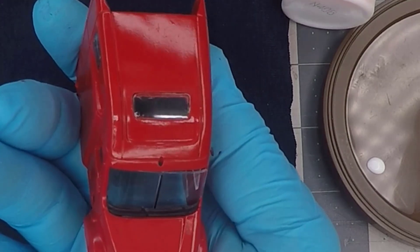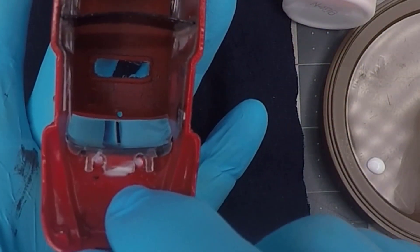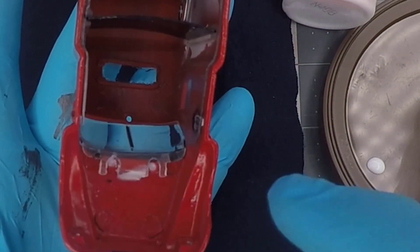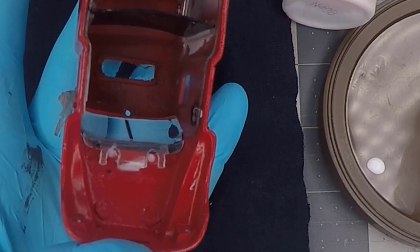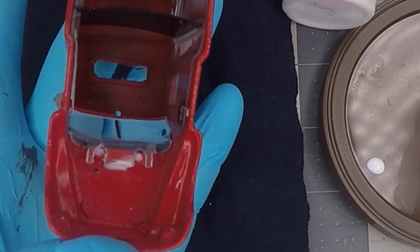I also use that on the inside here. You can see some of it's already dried clear, but some of that thicker stuff is still drying on the inside. I use that because I don't want haze on the inside of my windshield.